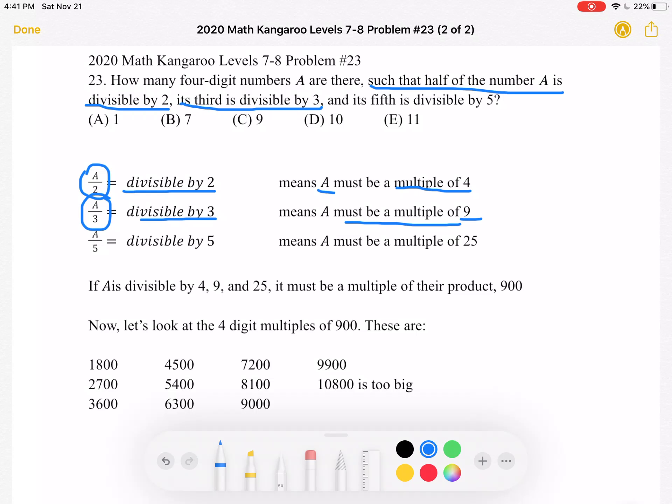We also know that its fifth is divisible by 5. So A over 5 is divisible by 5, meaning that A must be a multiple of 25.